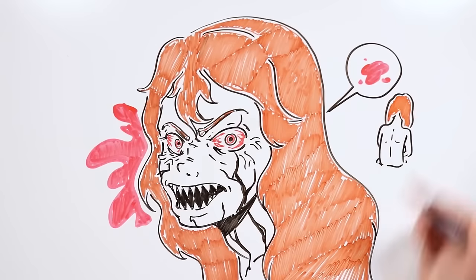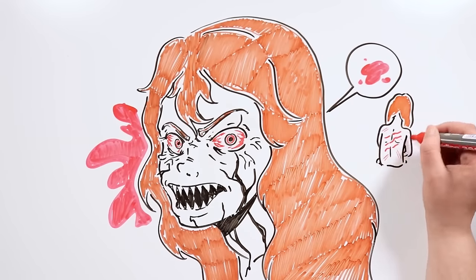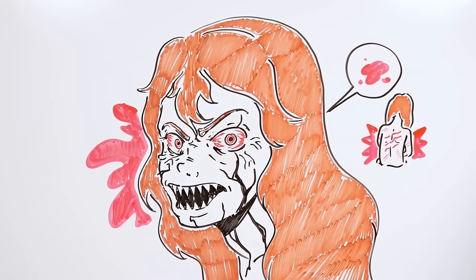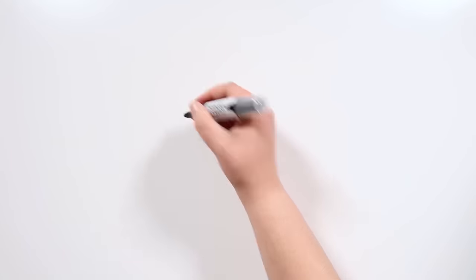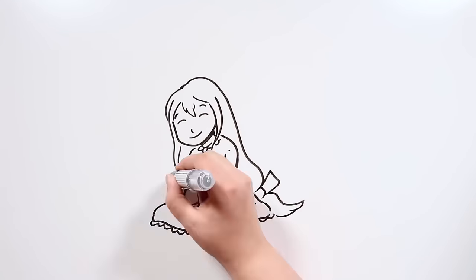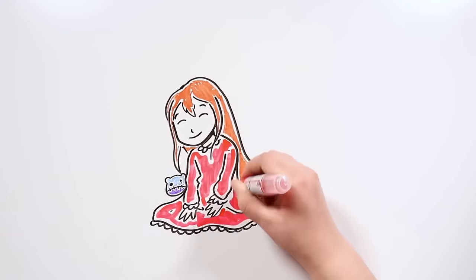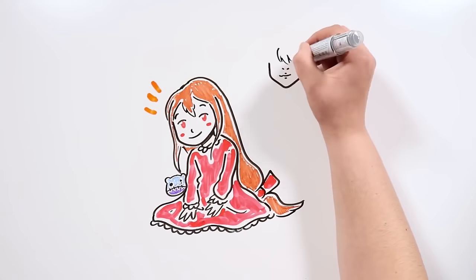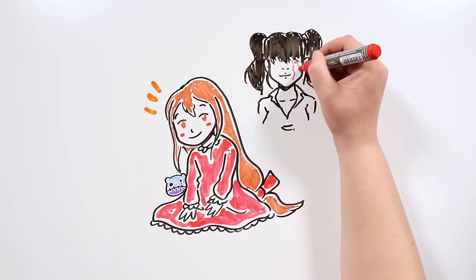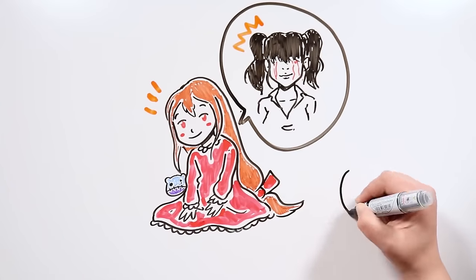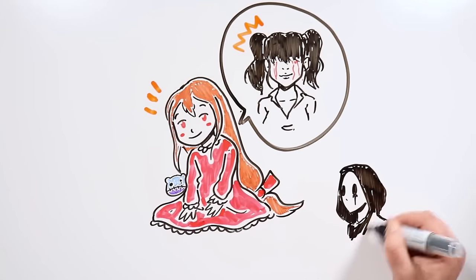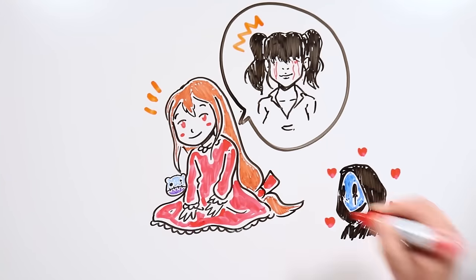On her back, she has severe scars she got when her mother tried to expel the demon inside of her body. However, just like any other 8 year old girl, she likes playing, coloring, and being around people. She gets along very well with Lulu, who is like her older sister, and is also secretly in love with Eyeless Jack, especially because he also eats his victims.